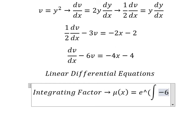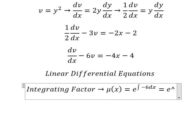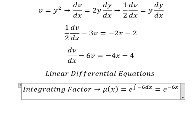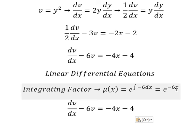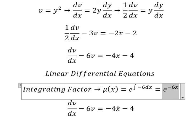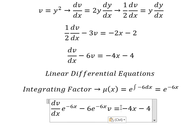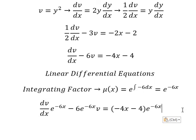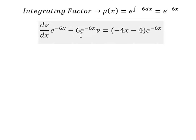We have negative 6 ds. The integral of this gives us negative 6s. That means we need to multiply both sides by e to the power of negative 6s.